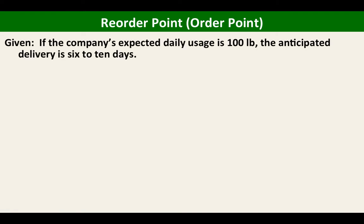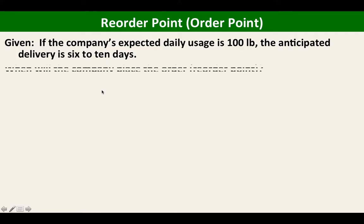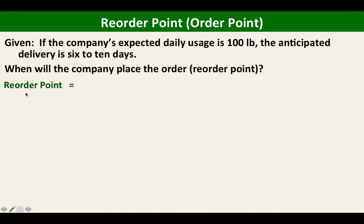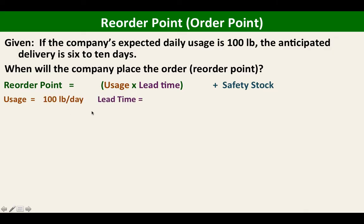Here we are going to do an illustration of the reorder point. The company's expected daily usage is 100 pounds, and the anticipated delivery lead time is 6 to 10 days. The problem is: when will the company place the order? That is the reorder point. The reorder point is computed as usage times lead time plus safety stock. The lead time is between 6 to 10 days.